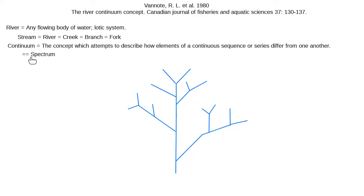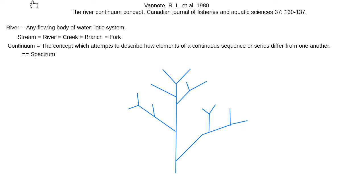What is the continuum? The continuum is the concept which attempts to describe how elements in a continuous sequence or series differ from one another — essentially how the headwaters differ from the mid reaches and from the large river portions of this lotic system. Another way of thinking of it is a spectrum, comparing the ends and middles of different portions along that spectrum.